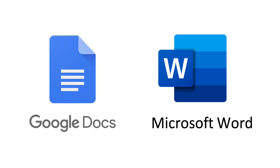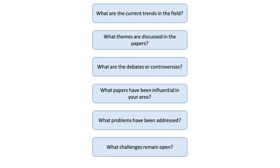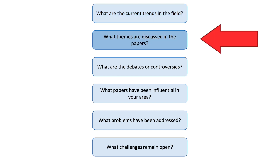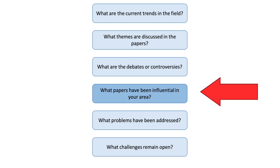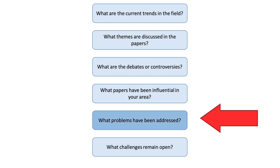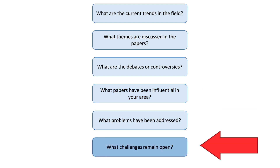Separately, make notes on Google Docs, Microsoft Word, or whatever service you prefer. The idea is to organise a nice structure for your review and place topics, debates, methods, and arguments in the appropriate order. Here are some questions to help guide you: What are the current trends in the field? What themes are discussed in the papers? What are the debates or controversies? What papers have been influential in your area? What problems have been addressed? What challenges remain open?